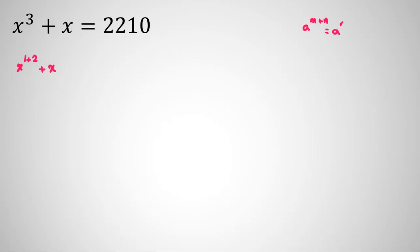It equals x times (x² + x), and you can factor out x. It will be x times (x² + 1), and you write 2210.